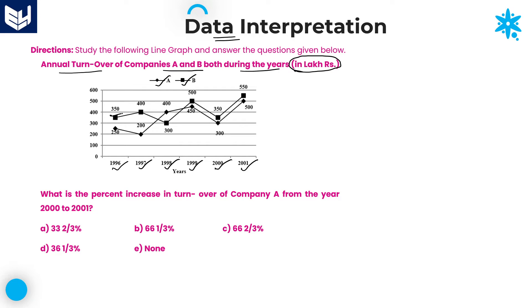It means that if the first value is 350, this 350 is indicating 350 lakhs. So whenever you are doing such calculations, you have to be very cautious about this particular statement — in terms of lakh rupees. Company A is represented with the line of rhombus shape, and company B is represented with the line of square shape. Based on those particular shapes, you need to check which line is representing company A and which line is representing company B.